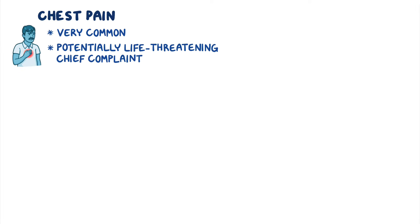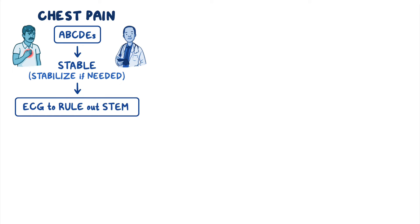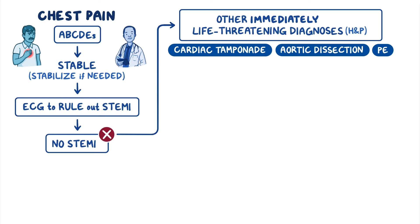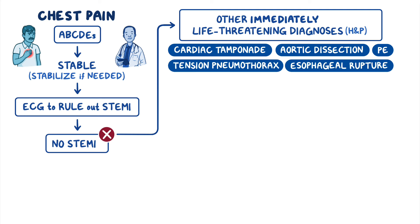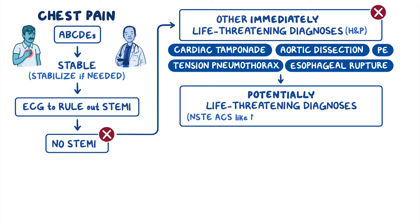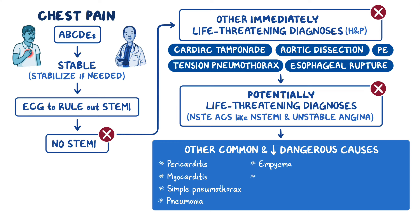As a quick recap: chest pain is a very common and potentially life-threatening chief complaint. Your first job is to systematically assess their ABCDEs and ensure the patient is stable, or stabilize them if needed. Your next step is to get an ECG to rule out STEMI. If there's no STEMI, consider other life-threatening diagnoses: cardiac tamponade, aortic dissection, pulmonary embolism, tension pneumothorax, and esophageal rupture. If these are ruled out, continue working through your differential by assessing for potentially life-threatening diagnoses like NSTEACS, NSTEMI, and unstable angina. Finally, assess for other common and less dangerous causes of chest pain including pericarditis, myocarditis, simple pneumothorax, pneumonia, empyema, chest wall malignancy, gastrointestinal pathologies, costochondritis, herpes zoster, and panic attack.